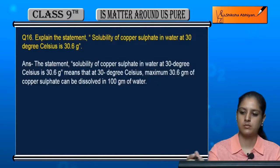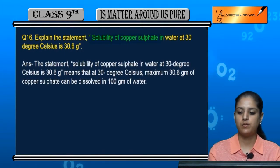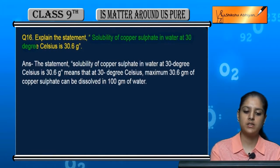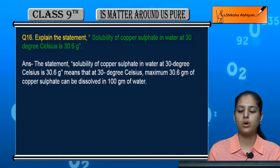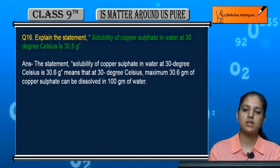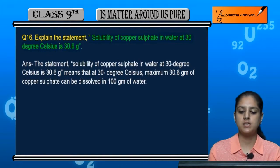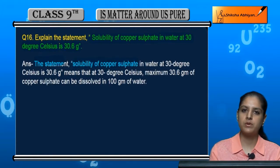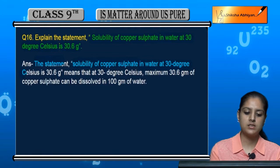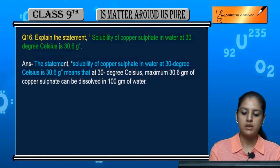Question 16: Explain the statement — the solubility of copper sulfate in water at 30 degrees Celsius is 30.6 grams. So the statement means that we need to explain what this solubility value represents at 30 degrees Celsius temperature.